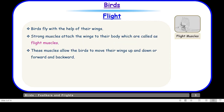So let us take up flight in birds. Birds fly with the help of their wings. Strong muscles attach the wings to their body, which are called flight muscles. As we can see in this diagram, these are the muscles attaching the wing to the body. These muscles allow the birds to move their wings up and down or forward and backward — these flight muscles help in the movement of wings.